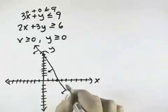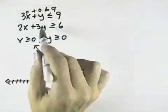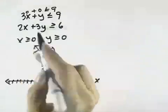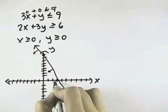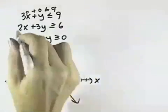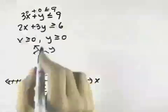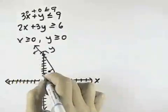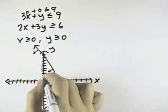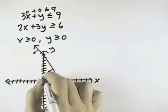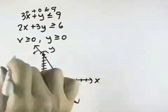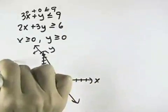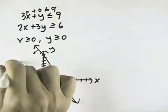For the next equation, if y is 0, x would be 3. And if x is 0, y would be 2. So I can draw my line through those two points.